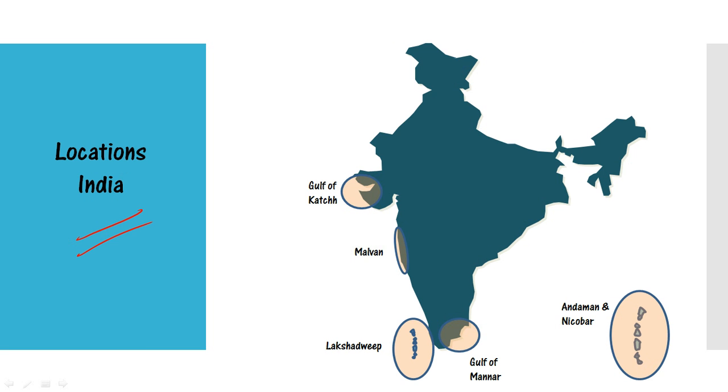In India, corals are found in the Gulf of Kutch, Malvan, Goa, Lakshadweep, Gulf of Mannar, Palk Bay, and the Andaman and Nicobar Islands.